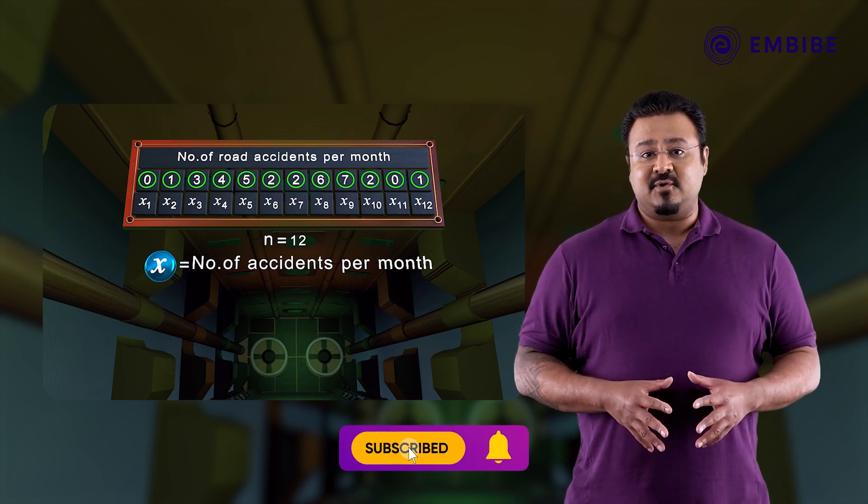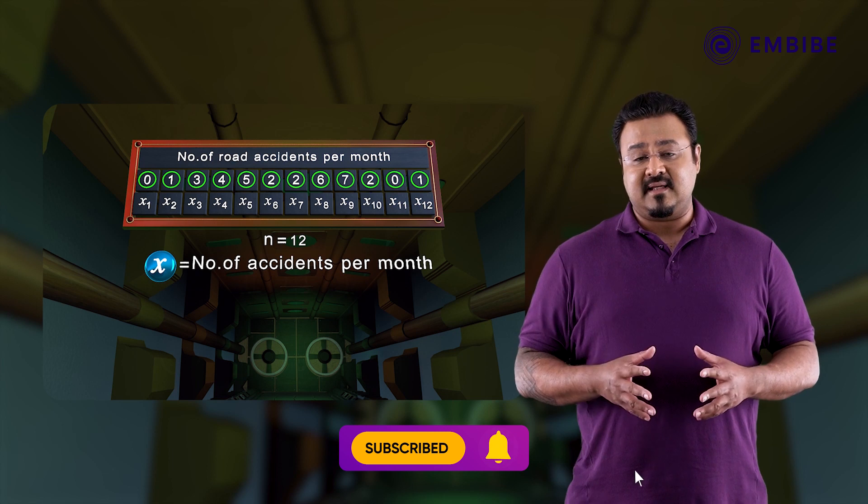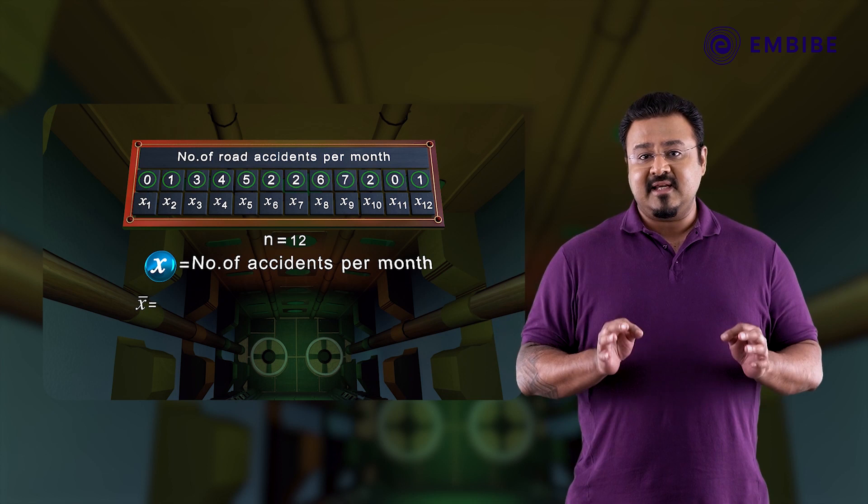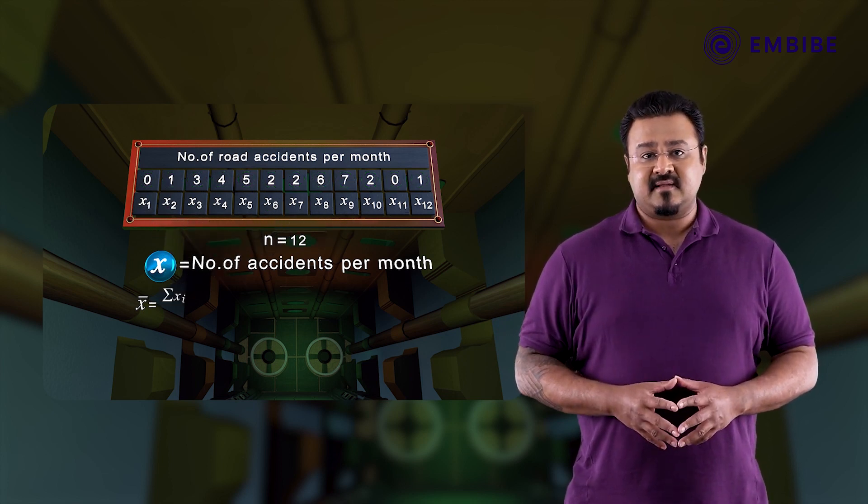Substituting these values in the formula of the mean for ungrouped data, we get x̄ = Σxᵢ/n.